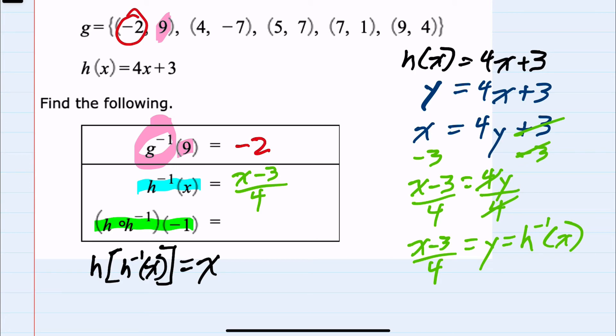So we don't need to calculate anything here, other than recognize that a composite of a function and its inverse will always have an output that is the same as the input. So putting a negative 1 into an inverse function and then the original function will always be the same as what was put in, so negative 1.